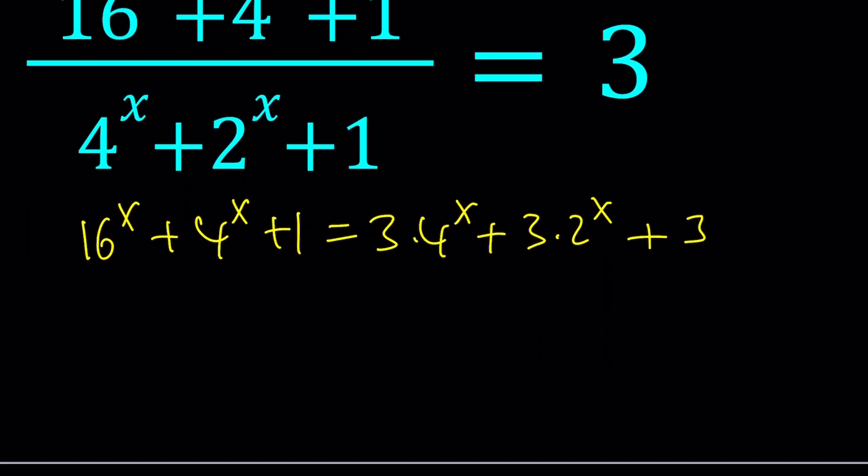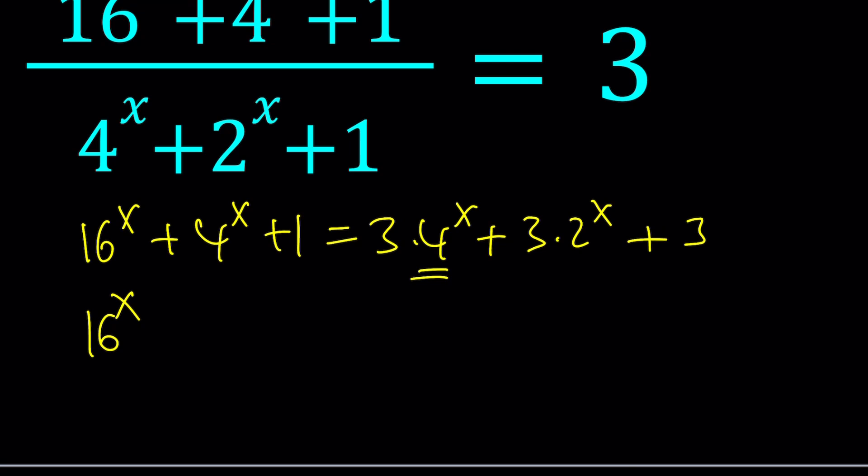Now we can put everything on the left hand side and subtract like terms. For example, this can be subtracted: 16 to the x plus 1 minus 3. That's going to be a negative 2 times 4 to the x and then minus 3 times 2 to the x. We've taken care of these and then finally 1 minus 3 is going to be a negative 2.